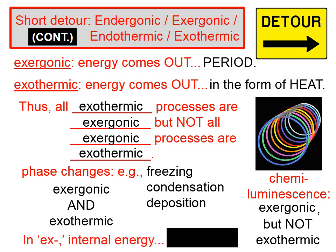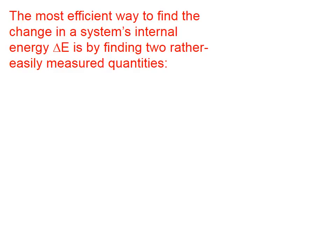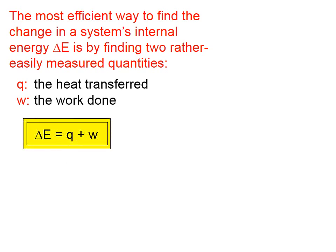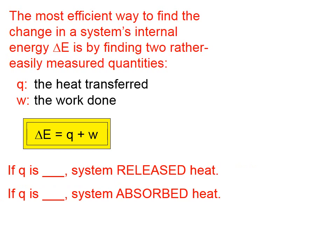In exergonic processes, the internal energy of something decreases because energy is being released. The most efficient way to find the change in a system's internal energy, delta E, is by finding two rather easily measured quantities: q, which is heat, and w, which is the work done. The change in internal energy equals q plus w. If q is negative, the system released heat. If q is positive, the system absorbed heat.